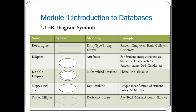The next symbol is an ellipse, used to represent the properties of an entity type — it is called an attribute. For example, if we consider a student entity, the various attributes or properties can be student name, date of birth, gender, etc.